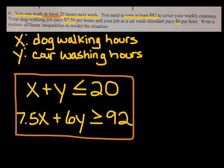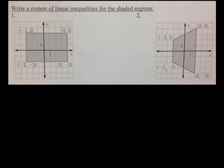If I did ask you to graph it, you could, because we just practiced that. The shaded area would give you all the combinations of dog walking hours and car washing hours that you could work and still meet your weekly expenses. Now I'm giving you the shaded regions and you have to write the system. We'll have multiple equations in a bracket.